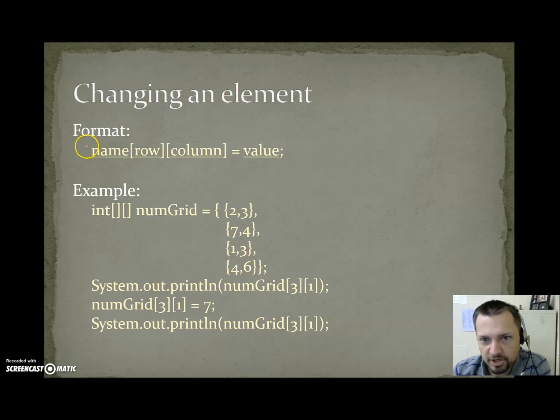On this slide we're going to talk about changing a value. The format is name bracket row bracket bracket column bracket equals value. So again here on the bottom we're going to print spot 3, 1, which on our last example we found out was 6. So this would print out 6. Then we're going to go to spot 3, 1 and change it to 7. So we'd go down 3, 1 over, and we'd replace that with a 7. The 7 goes right there. Then when we print spot 3, 1, it has changed, so the next time we print it, it would be 7.